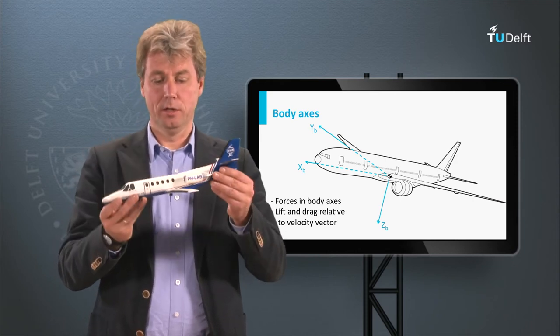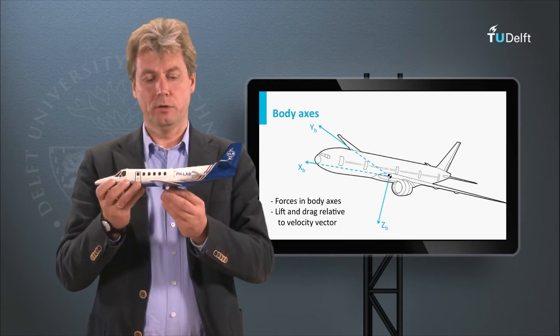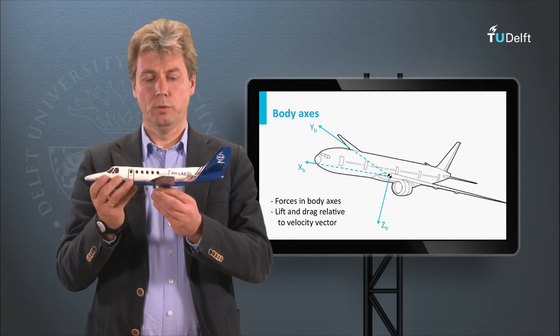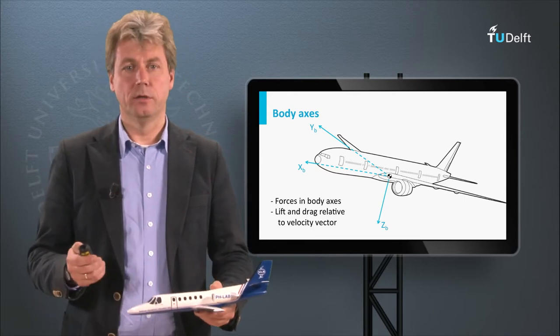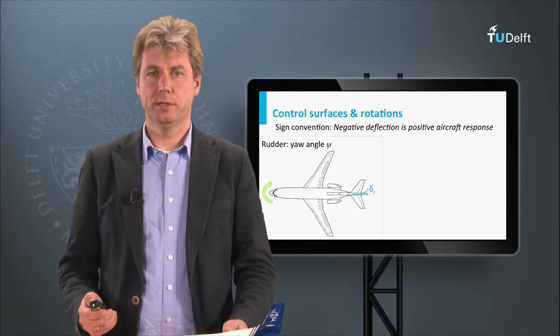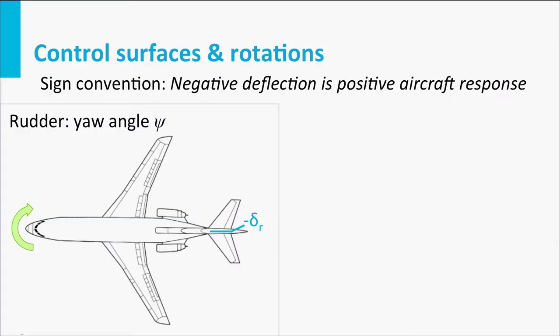The pitch angle is the angle with which we rotate around the Y axis. And the rotation around the Z axis is what we call yaw — this yawing of the aircraft. If we look at the symbols we use for these movements, we see the rudder causing the yaw angle psi. If it is extended to the starboard side, it has a negative sign, but it results in a positive yawing angle psi.